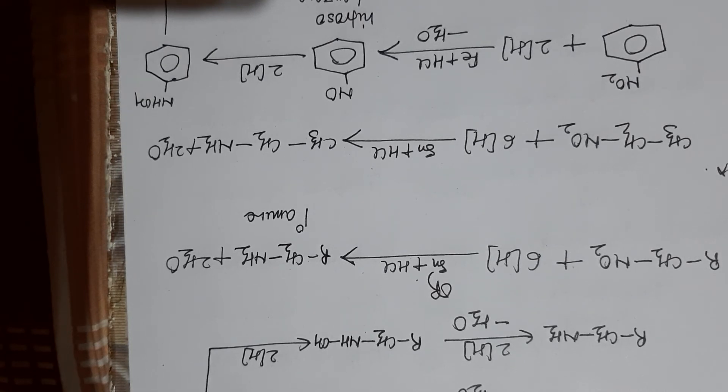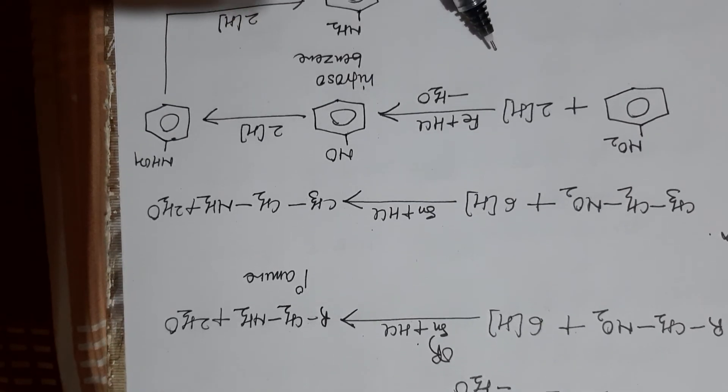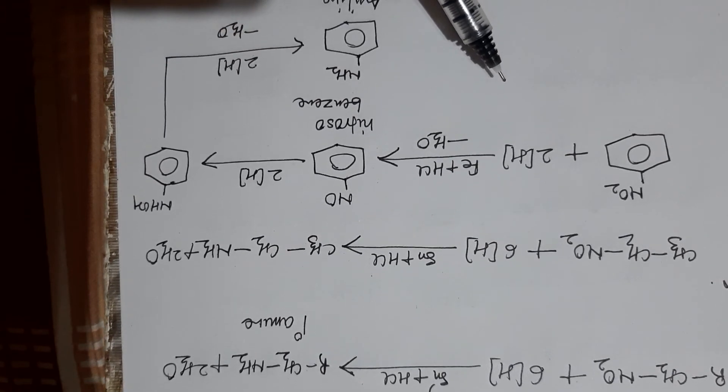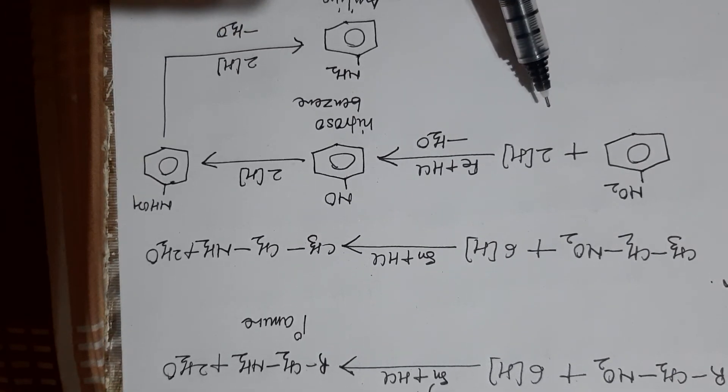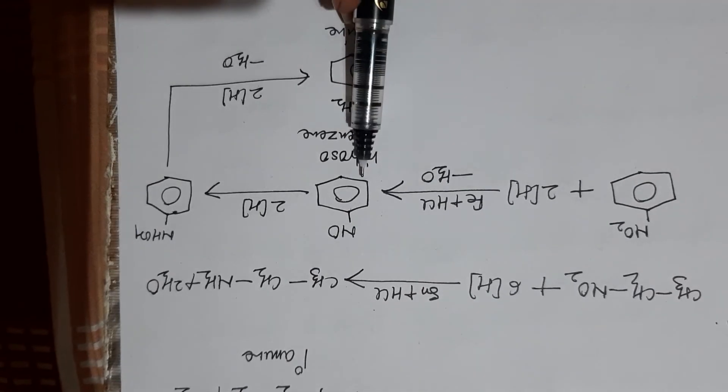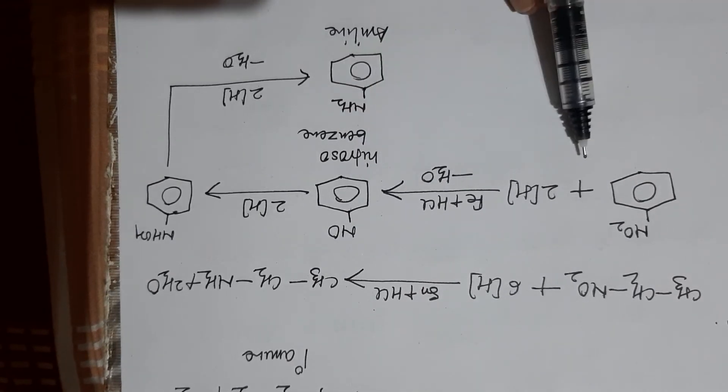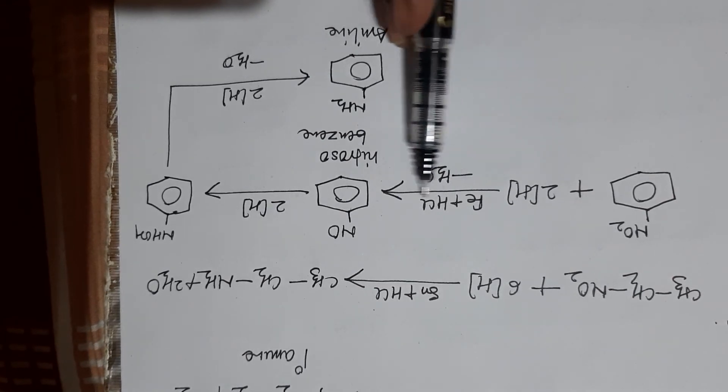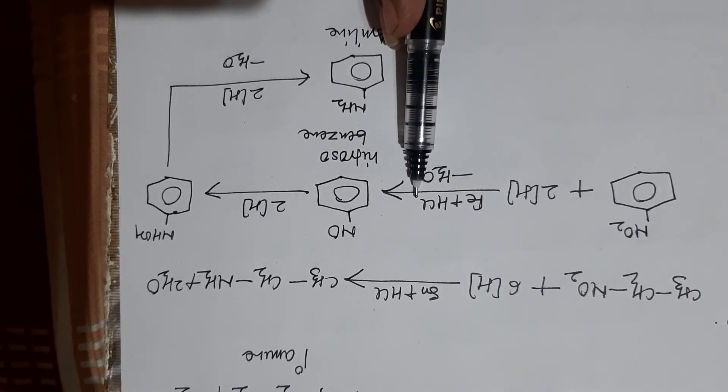This is the most important process for the preparation of aniline or aromatic amine. As you are seeing here, stepwise: nitrosobenzene in the first step. I have taken here Fe and HCl.